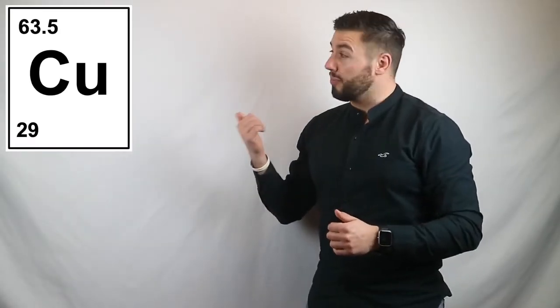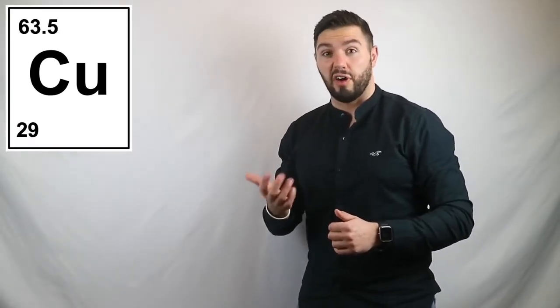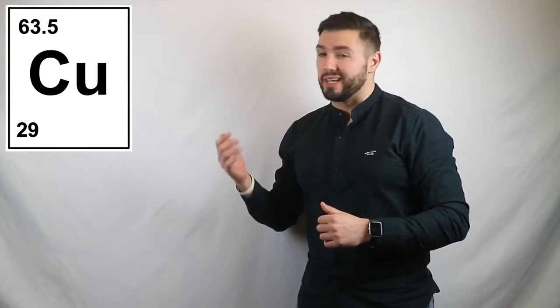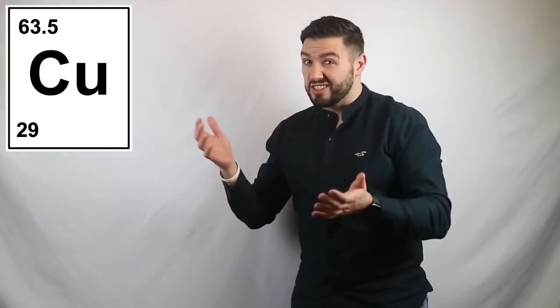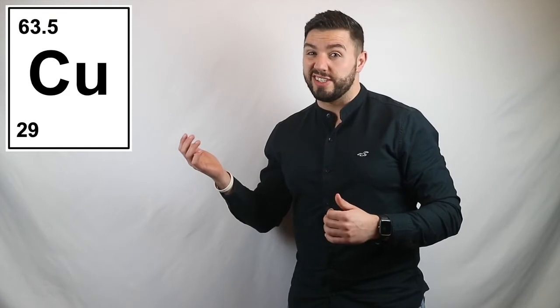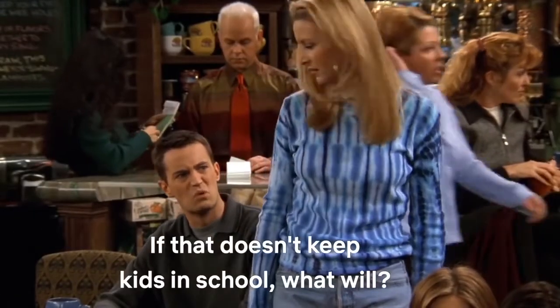Now, you'll notice on the periodic table that copper is actually written down as 63.5 instead of 63.6. And that's because the reality is actually somewhere in between, but 0.5 is easier to deal with. So, we're actually doing you a favor. You're welcome. If that doesn't keep kids in school, what will?